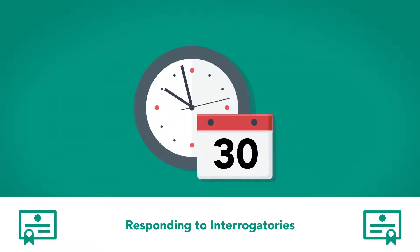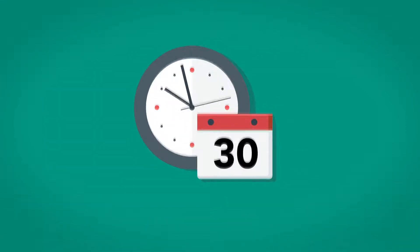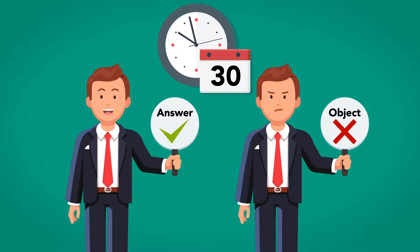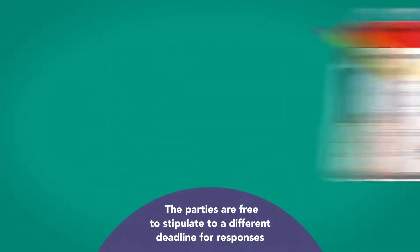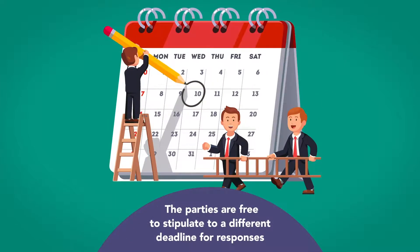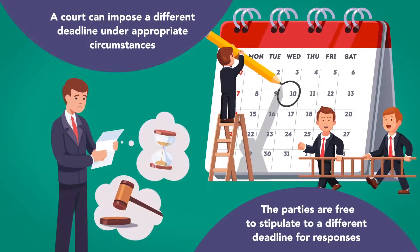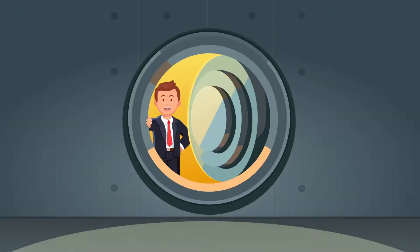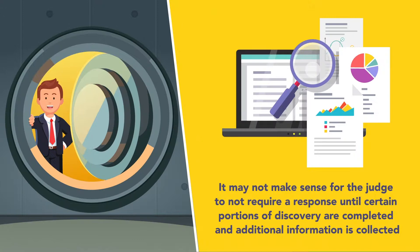A party receiving interrogatories has 30 days from service to answer or object to the questions. However, the parties are free to stipulate to a different deadline for responses, and a court can impose a different deadline under appropriate circumstances. Examples of appropriate circumstances may include when the information sought is not immediately available to the responding party — it may not make sense for the judge to require a response until certain portions of discovery are completed and additional information is collected.